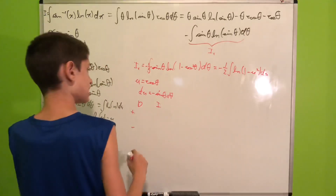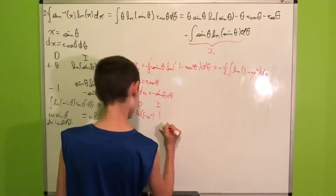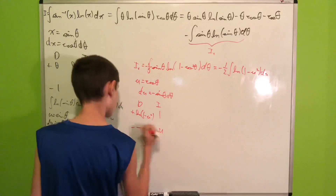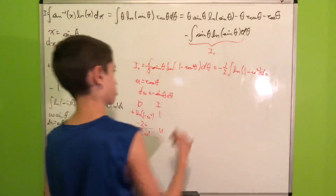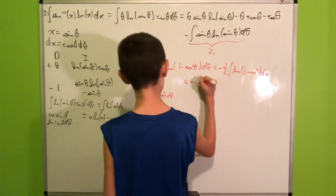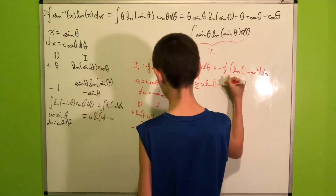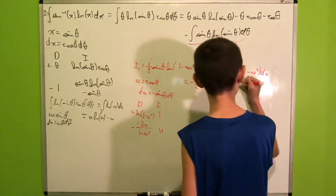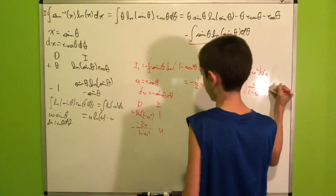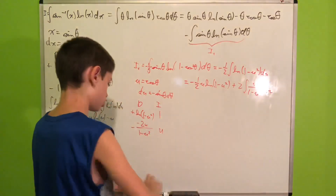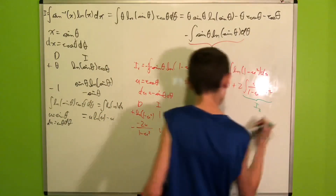We use integration by parts on ∫ln(1 − u²) du: differentiate ln(1 − u²) to get −2u/(1 − u²), and integrate 1 to get u. This yields u·ln(1 − u²) + 2∫u²/(1 − u²) du. We call this new integral I2.